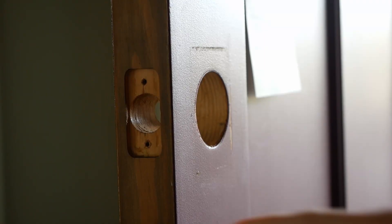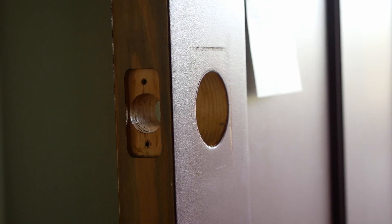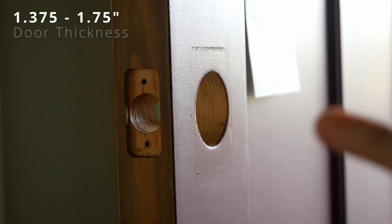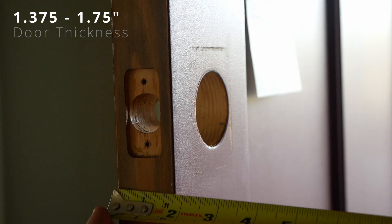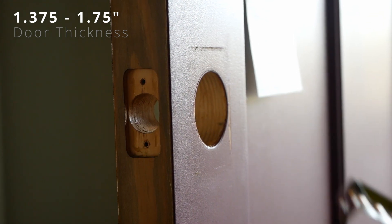Before we get going, there are a few dimensions here we want to verify. They are pretty standard dimensions and should fit most US doors, but might be helpful to double check before you get going. The first one is door thickness. It needs to be between one and three eighths and one and three quarters. So this particular door right here is about one and five eighths, so we are good on that dimension.